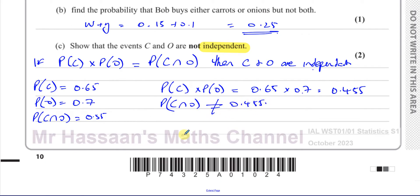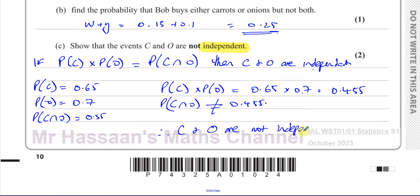So buying carrots and onions do depend on each other. If this product had equalled 0.55, or if the intersection had been 0.455, then they would be independent — they have to be the same. That's part C done, which concludes question 3 part 1. Now for part 2: F, G, and H are three events. F and H are mutually exclusive. F and G are independent.